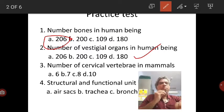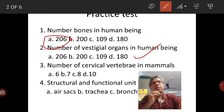Number of cervical vertebrae in mammals, typical number of cervical vertebrae in mammals is 7.